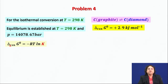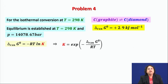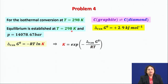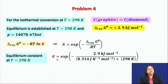The standard Gibbs free energy of reaction is related to the equilibrium constant as ΔG° = −RT ln K. Therefore, K = exp(−ΔG°rxn / RT). We know the value of ΔG°rxn, the universal gas constant R, and the temperature, so we can find the equilibrium constant at 298 Kelvin.